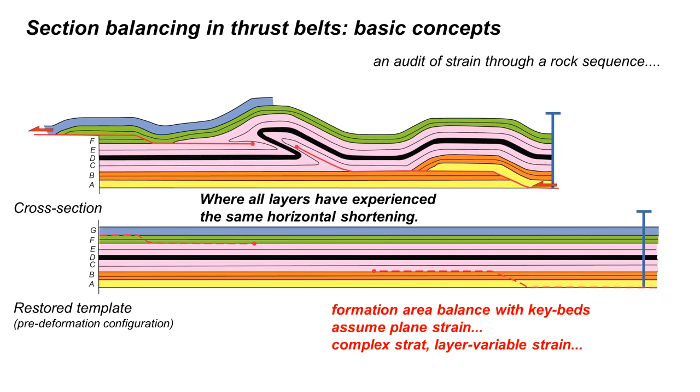The key point is all layers have experienced the same horizontal shortening. We need to take particular care with where we put the loose lines and it's the ability to track the loose line behavior through the deformation that's the key to demonstrating that a cross-section balances.